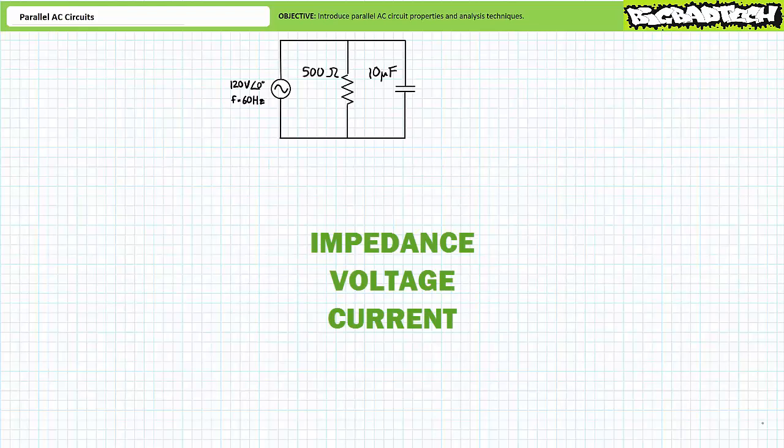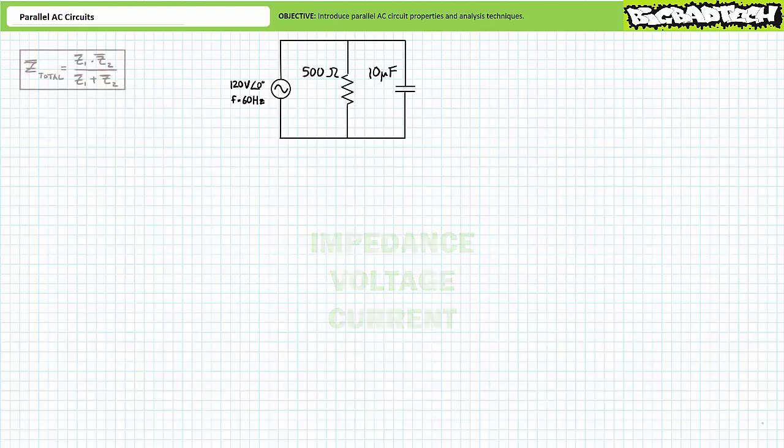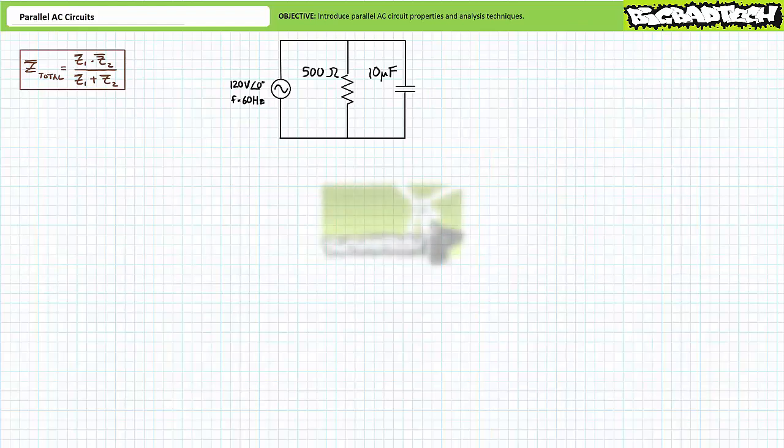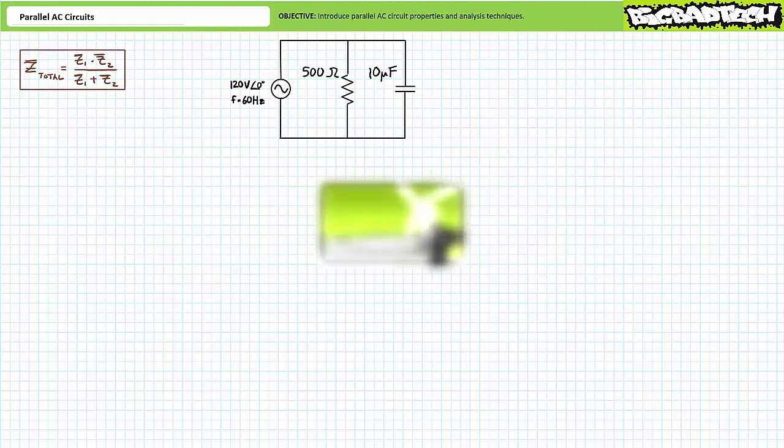Let's explore basic parallel AC circuit properties in terms of impedance, current, and voltage distribution. Let's first examine parallel impedance. The complex impedance of a parallel or side-by-side configuration of elements can be calculated using two different techniques as illustrated in the parallel complex impedance lecture available at the Big Bad Tech channel.